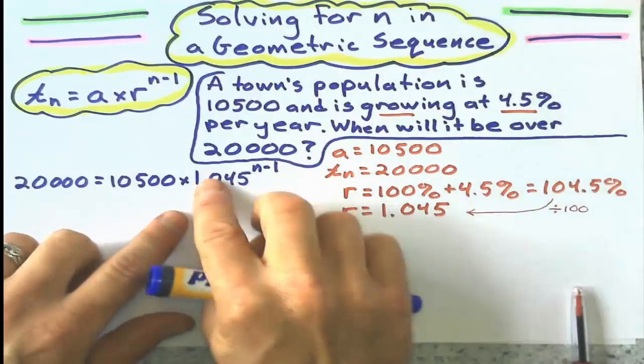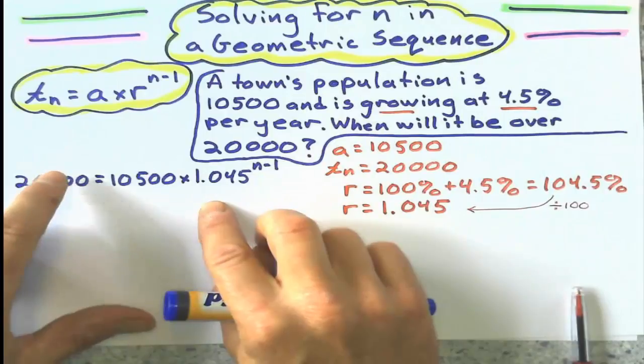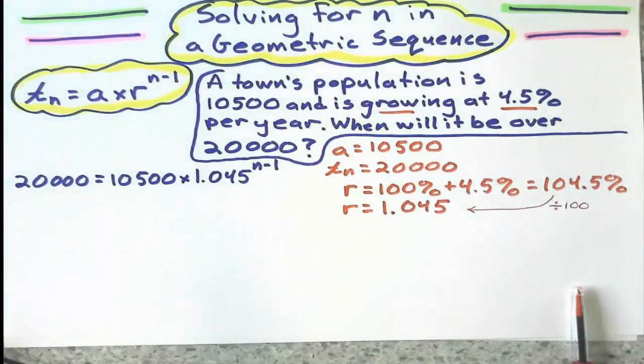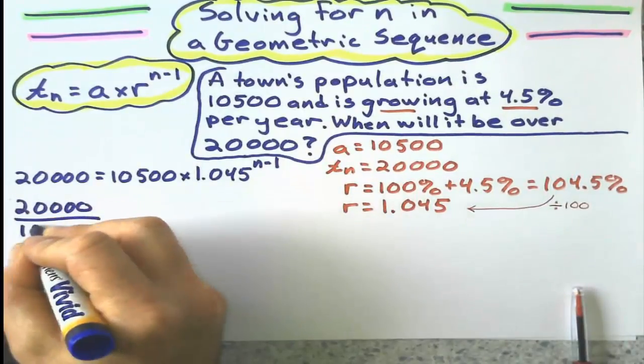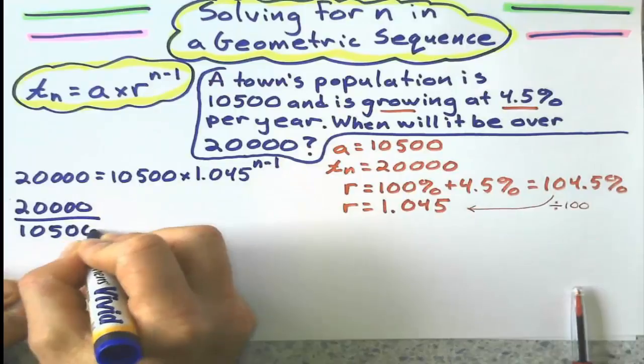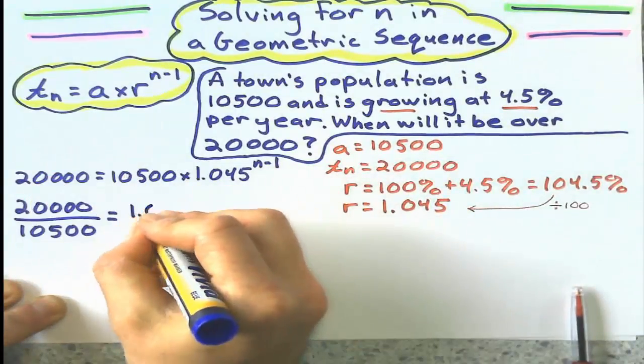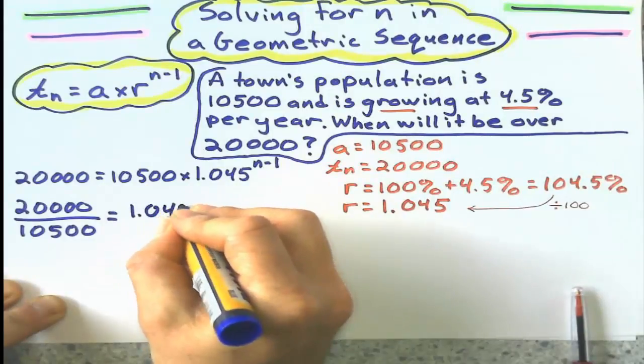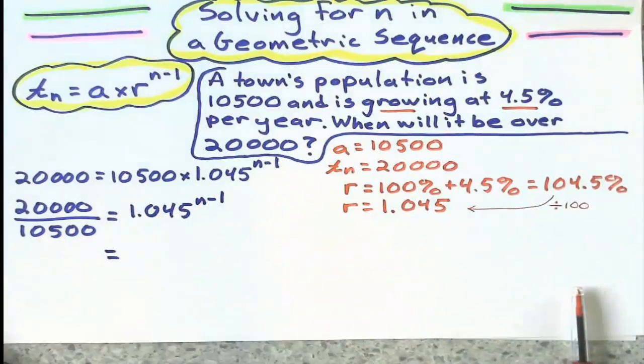First up, I want to try to isolate this part of the equation. I want to solve for n. So I'm going to divide this side by 10,500. Divide. So I'm going to say 20,000 divided by 10,500. And that is on that side now. So on the right side of the equation is just 1.045^(n minus 1). Work this out on the calculator.